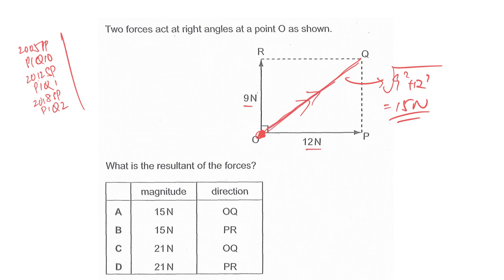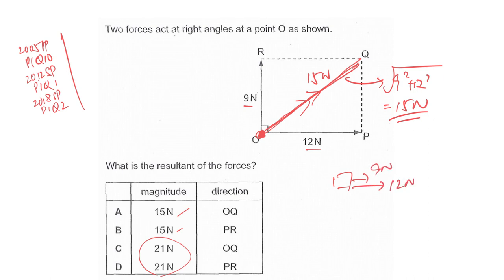The result is 15 Newton, so the magnitude of the resultant OQ is 15 Newton. You can also eliminate 21 Newton straight away, since 21 Newton is only achievable if 9 Newton and 12 Newton act in the same direction — that's the maximum. The direction is clearly along OQ, so the answer is A.